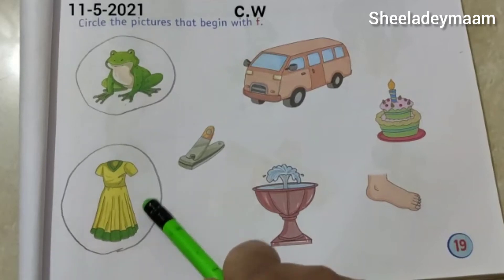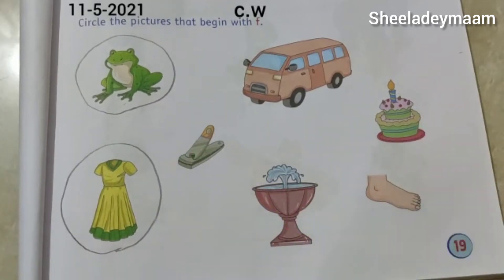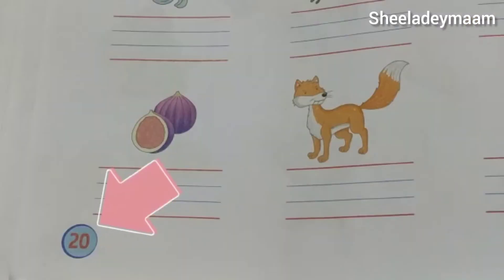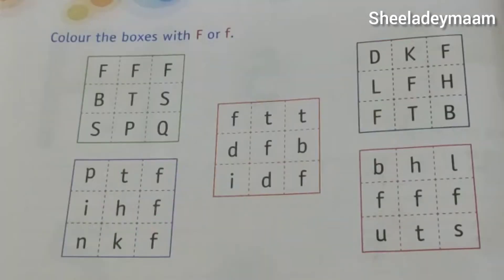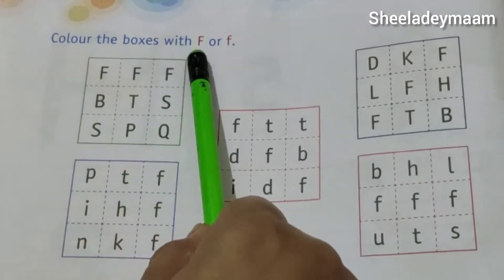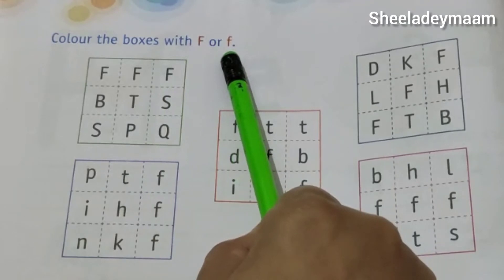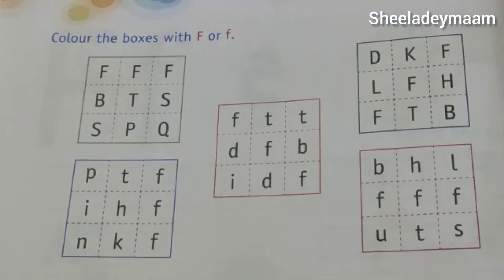So children, in the same way you have to do this. Now let's move on to the next page. This is page number 20. Our question is: color the boxes with capital letter F or lower case F. So children, in this question we have to color those boxes where you can see capital letter F or lower case F.